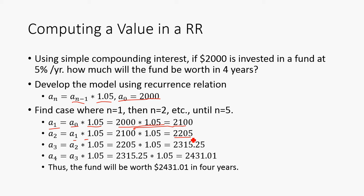This is a_2, so now we can calculate a_3. a_3 is just going to be a_2 * 1.05, and we're going to get 2315.25. Repeat the process again. We're going to get 2431.01. So the fund will be worth $2,431.01 in 4 years.